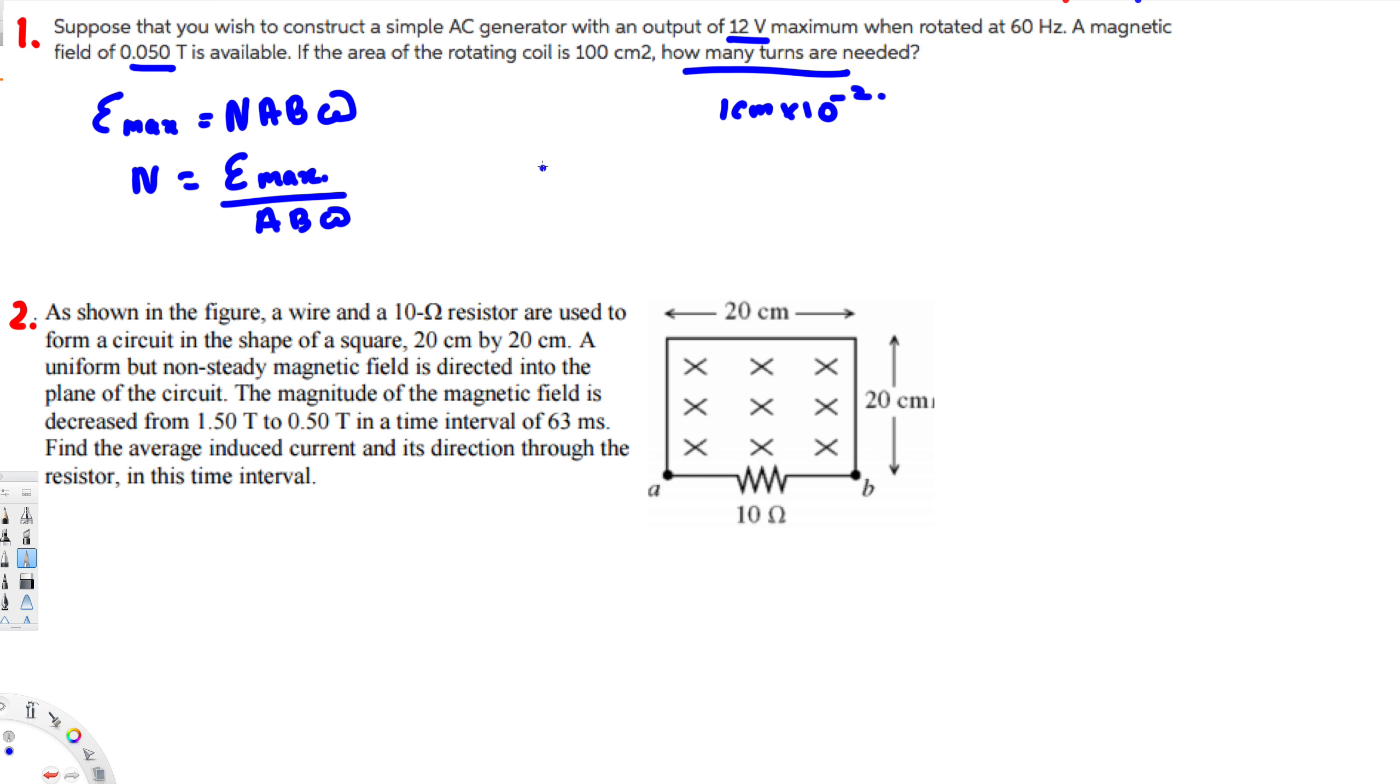Omega should be in radians per second. We don't have that, but Omega is equal to 2π times f. Here we have the frequency, so we can use this one to calculate Omega. Let's go ahead and plug the values. Let's create the new equation: instead of Omega, I'm going to put 2πf. So this is going to be EMF maximum over A B times 2πf.